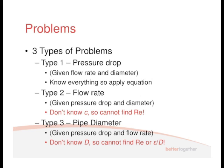Type 2 is where you've got to determine the flow rate. You're given the pressure drop and the diameter, but you're not given the velocity. So we can't find the Reynolds number. There's a process you've got to go through to work out what your friction factor is, even though you haven't got your Reynolds number.